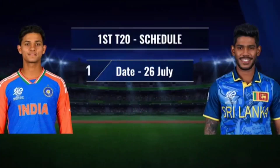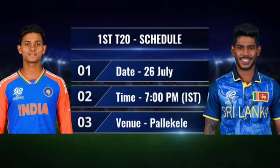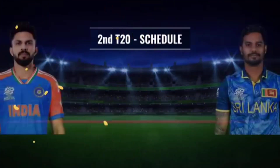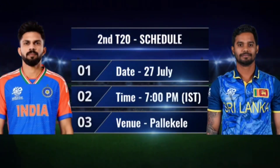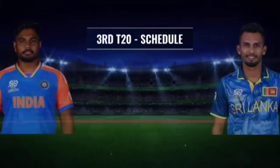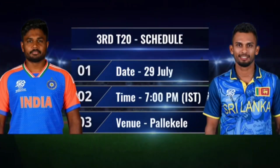Let's talk about the schedule. The first match is on 26th July at 7 PM Indian Standard Time, at Pallekele International Cricket Stadium in Sri Lanka. The second match is on 27th July at 7 PM, also at Pallekele International Cricket Stadium. The third match is on 29th July at 7 PM, again at Pallekele International Cricket Stadium.